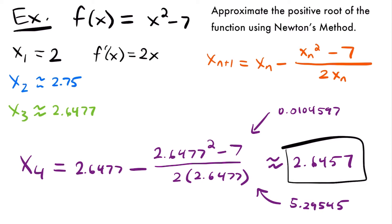You could certainly keep going and find x sub 5, x sub 6, x sub 7, and so on. At some point the values will be so close to each other that you'll have a very plausible approximation of that x-intercept. I decided to cut it off here because these two values are fairly close together, compared to the jump from 2 to 2.75. Let's look at another example of using Newton's method.